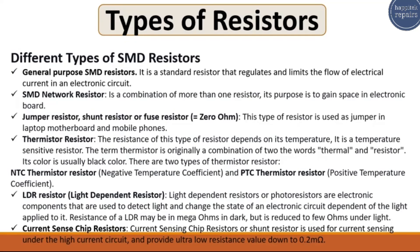The next type is the LDR resistor, or light dependent resistor. Light dependent resistors, also called photo resistors, are electronic components used to detect light and change the state of an electronic circuit depending on the light applied to it. The resistance of an LDR may be in mega-ohms in the dark.